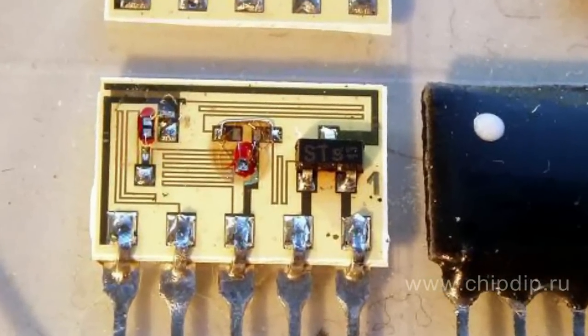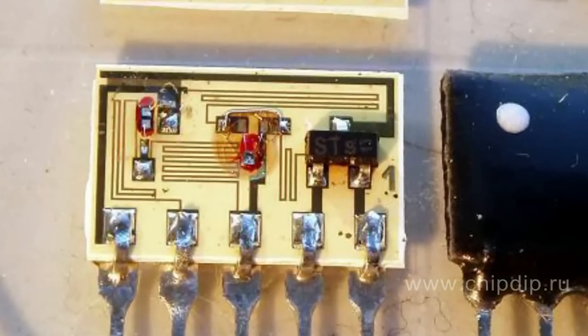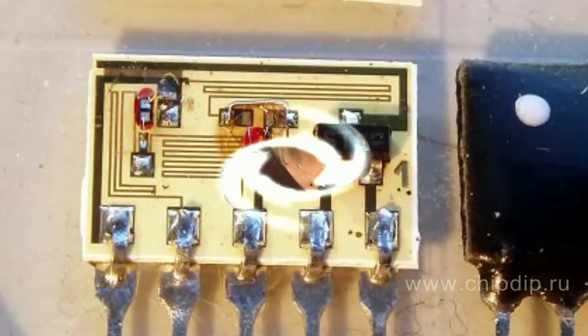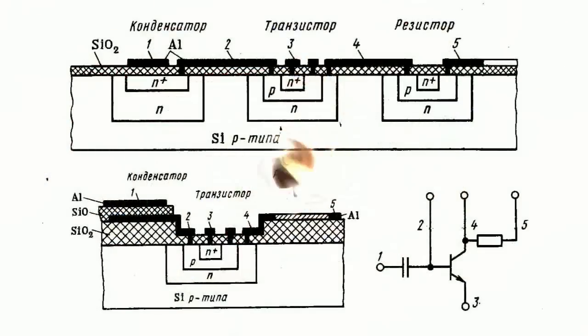By structural and technological criterion, semiconductor and hybrid integrated circuits are distinguished. The main active elements of semiconductor integrated circuits can be bipolar transistors or FETs.